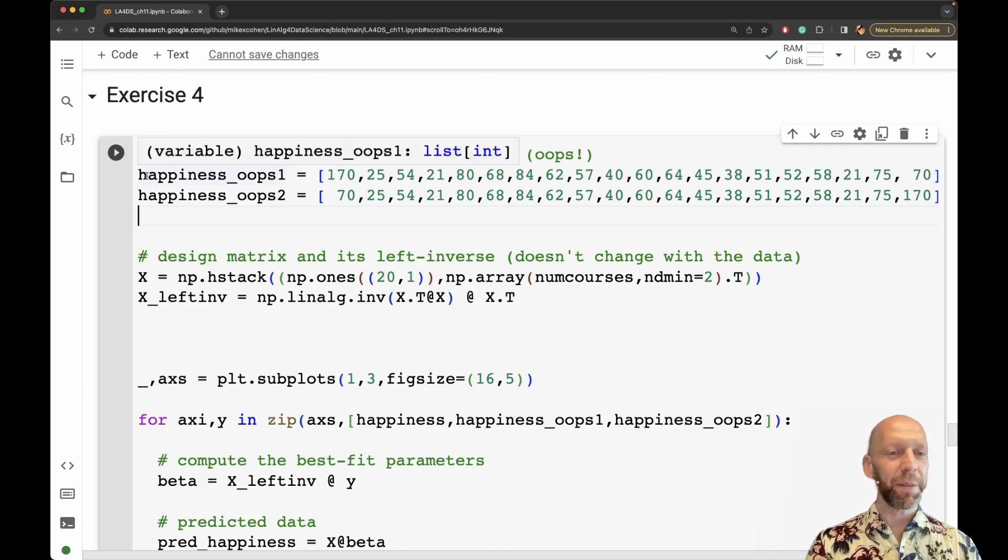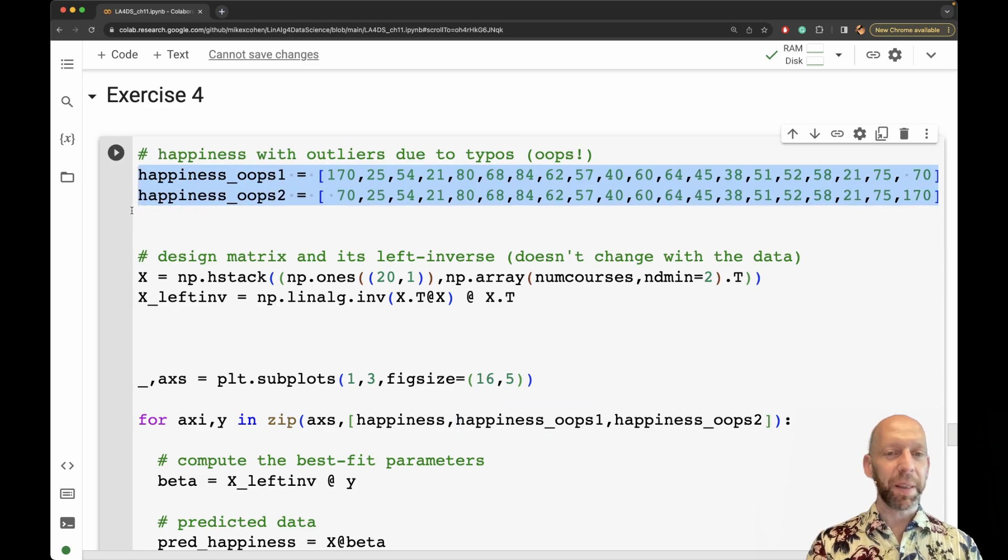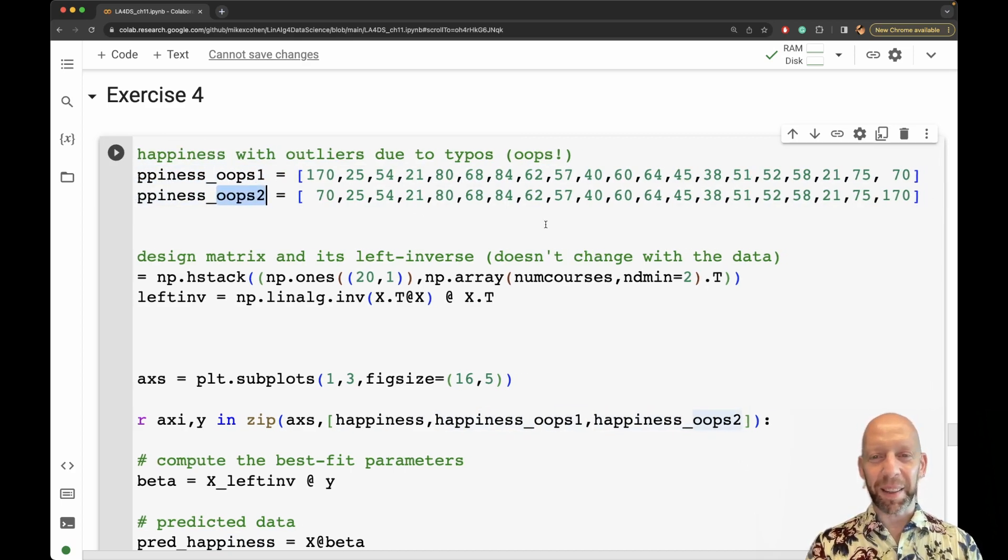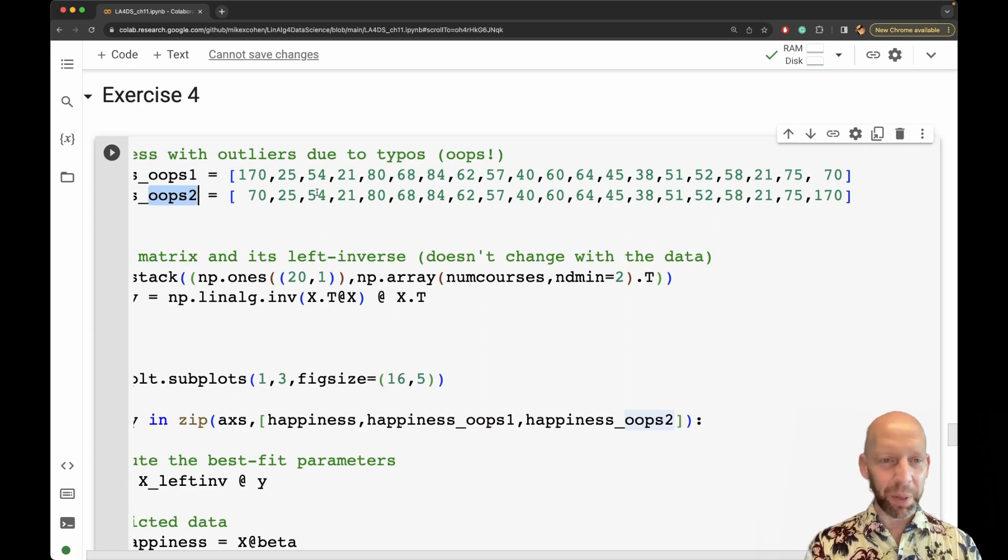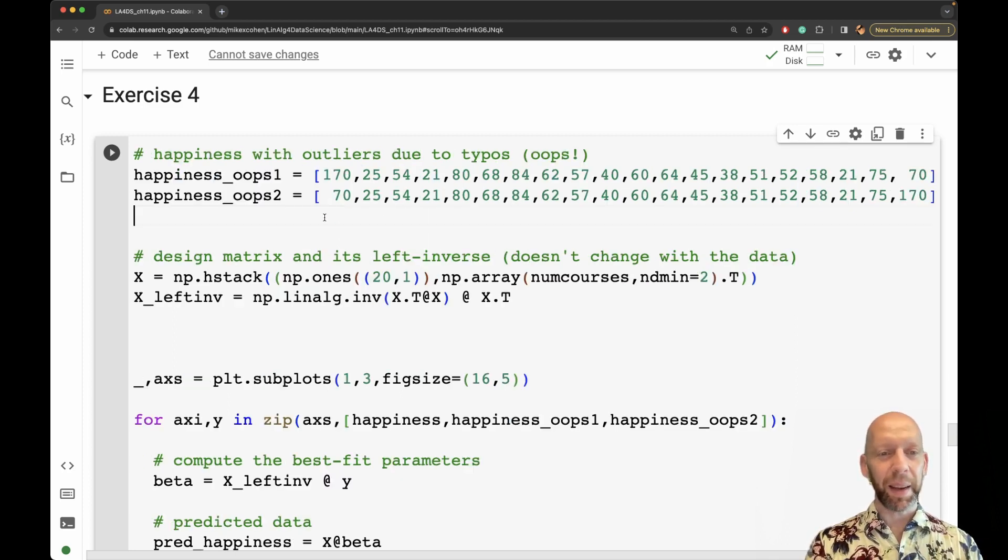What you see here is I have taken two different vectors here. Happiness, I call this oops one and oops two. And what you see here is that these are all exactly the same lists of numbers except for here, this is the original data at 70. And here I changed it to 170. Here, the original data are 70. And here I changed it to 170. So again, different outliers, same numerical outlier, but different place in the data set.